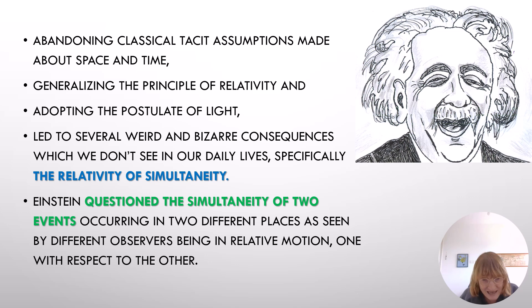Abandoning classical tacit assumptions made about space and time, generalizing the principle of relativity, and adopting the postulate of light led to several weird and bizarre consequences which we don't see in our daily lives, specifically the relativity of simultaneity. Einstein questioned the simultaneity of two events occurring in two different places as seen by different observers being in relative motion one with respect to the other.